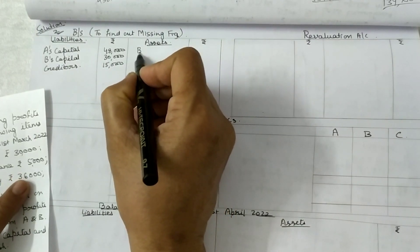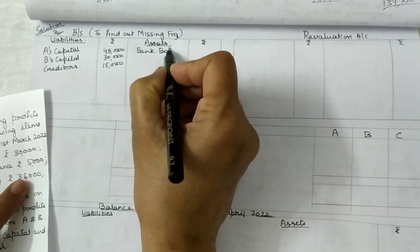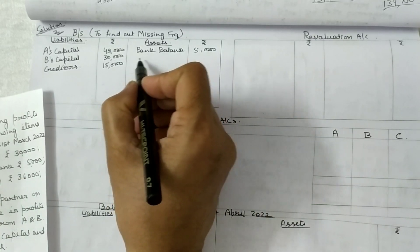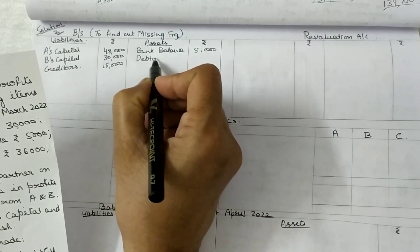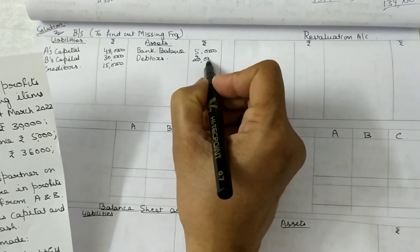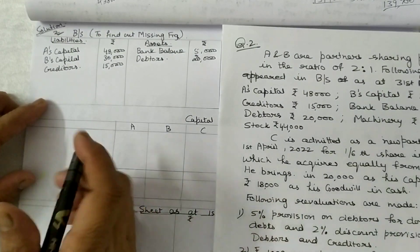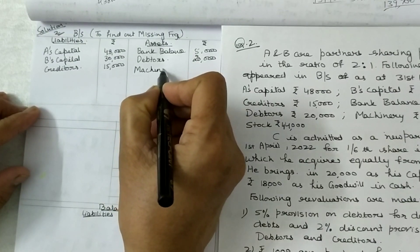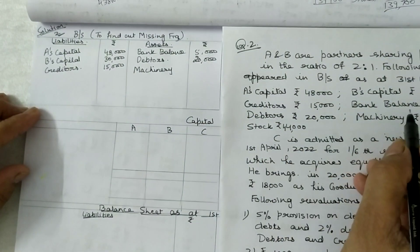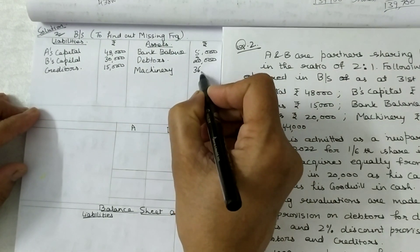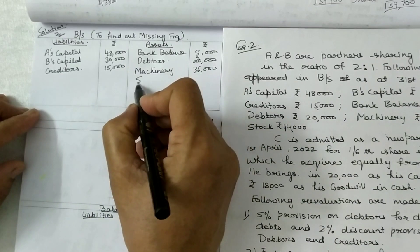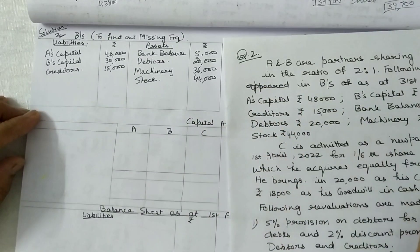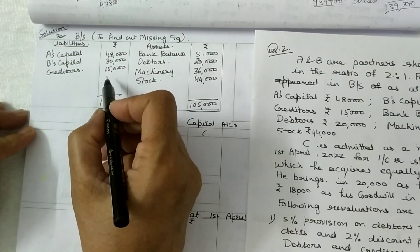Additional items: 5,000 cash, bank balance 5,000, debtors 20,000, machinery 36,000, and stock 44,000. The total income figure is 12,000.